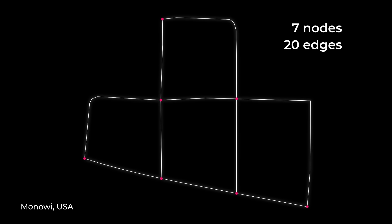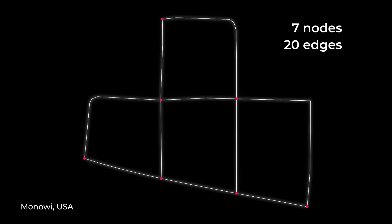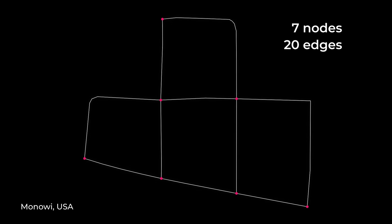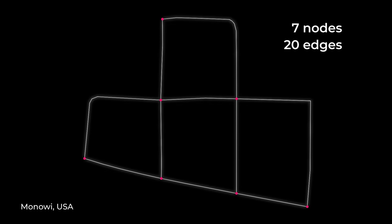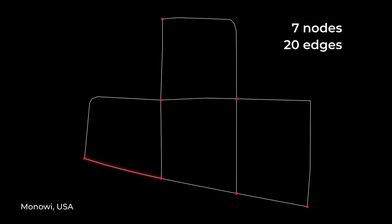Edges are the connections between the nodes, essentially the roads themselves. But hang on, aren't there 1, 2, 3, 4, 5, 6, 7, 8, 9, 10 edges for Monowee?